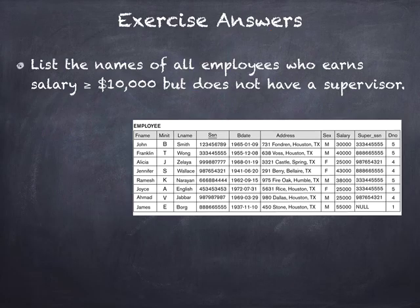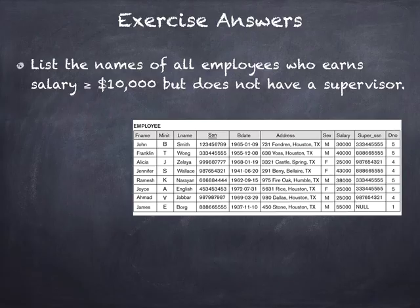Let's move to the next exercise: list the names of all employees who earn a salary greater than or equal to $10,000 but do not have any supervisors. They earn more than $10,000 but there is no one supervising them. If we go back to the table, the EMPLOYEE table has a column called Super_SSN.